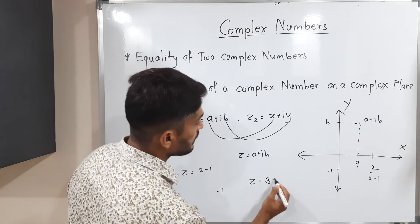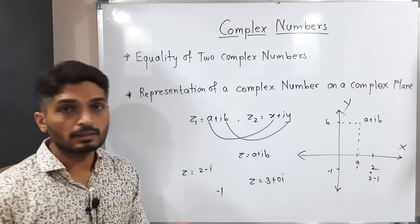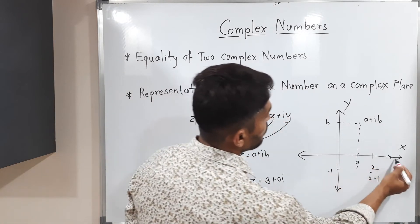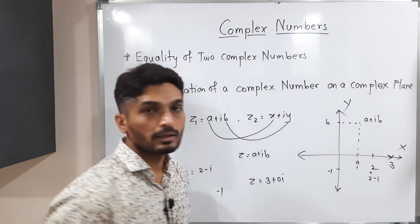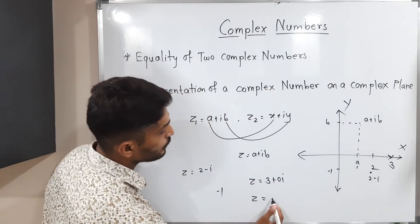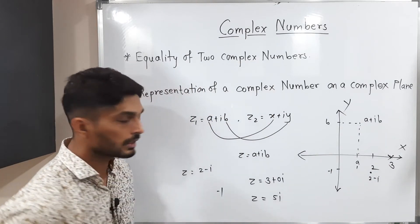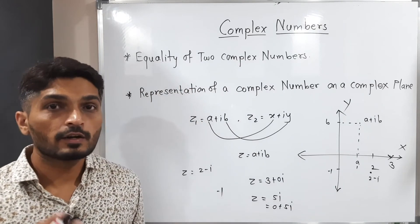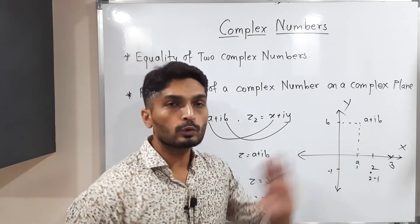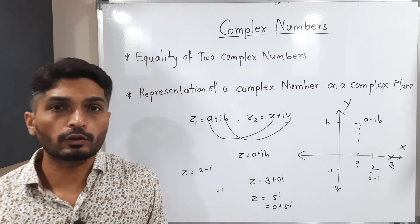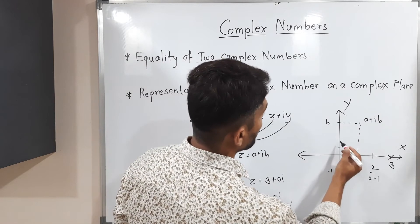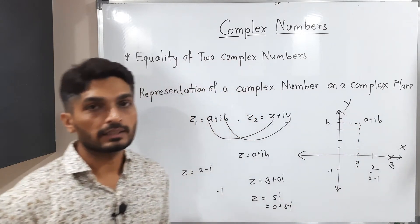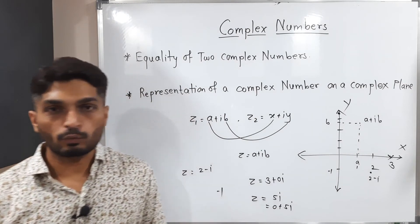Second example: z equals 3, which means 3 plus 0i. The real part is 3 and the imaginary part is 0, so this point lies on the real axis. Next, z equals 5i means 0 plus 5i. The real part is 0 and the imaginary part is 5, so we count 1, 2, 3, 4, 5 on the imaginary axis — the point lies on the imaginary axis.